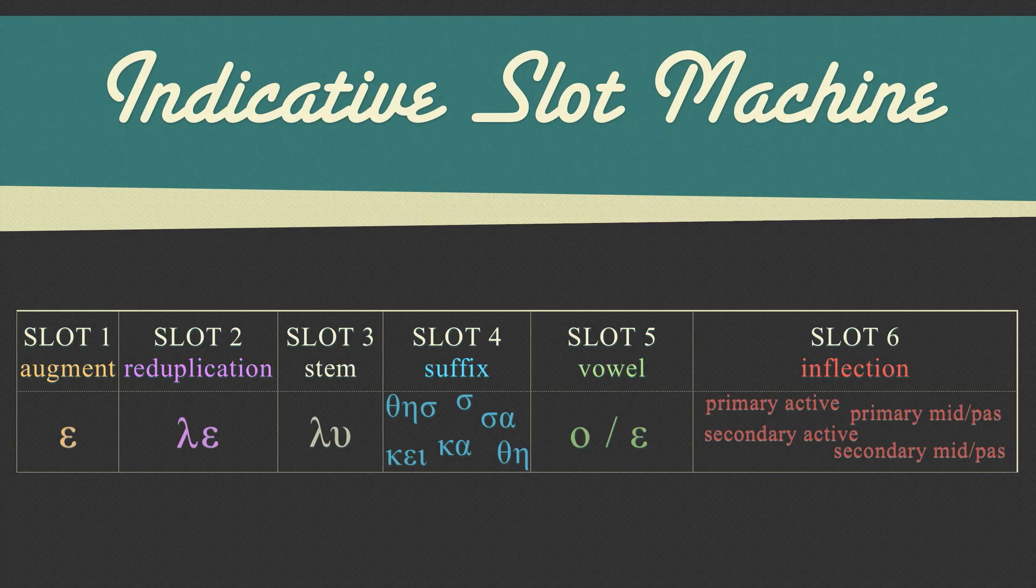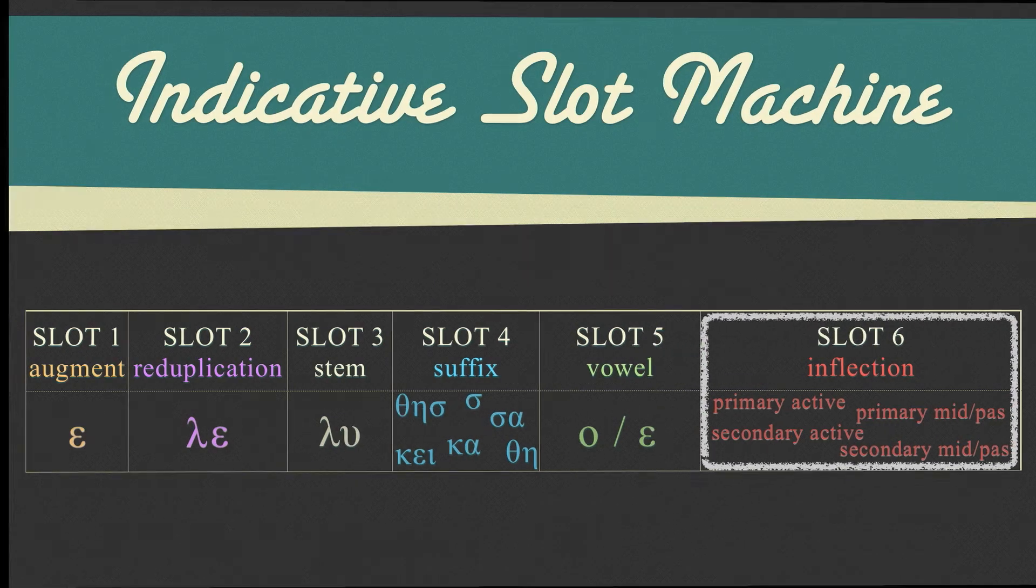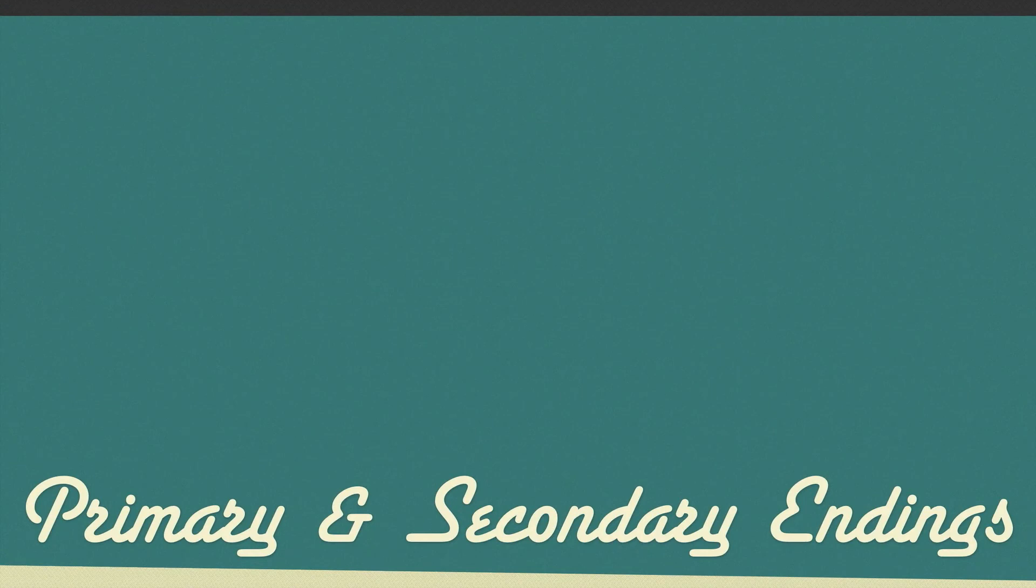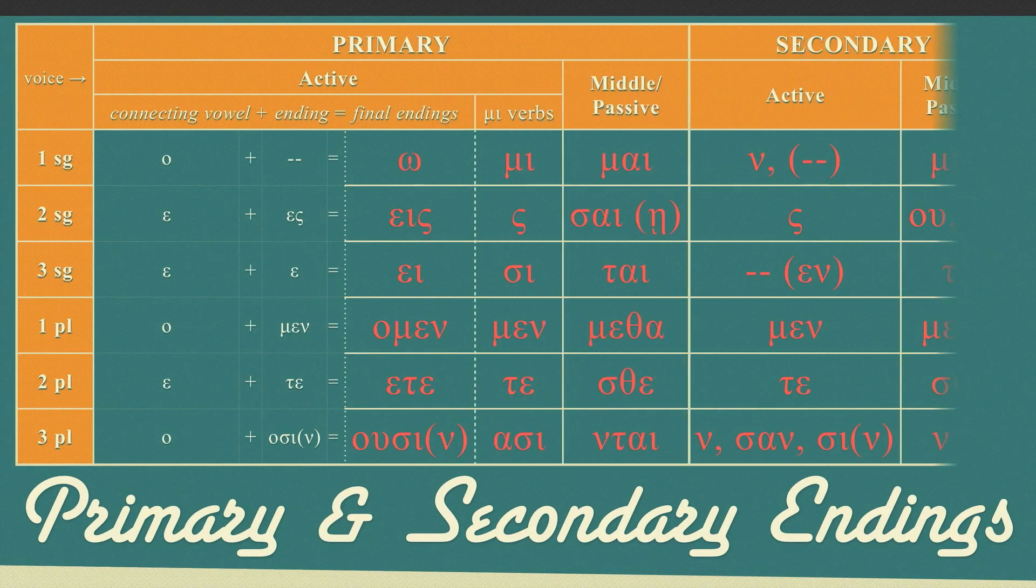First, let's start with what goes on the end of verbs: primary and secondary endings. Verb endings indicate the person and number of verbs and can also help identify the voice of verbs too.